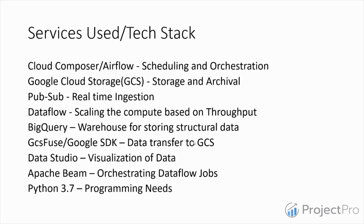The second service is Google Cloud Storage, which will be used for storage and archival. Google Cloud Storage is similar to S3 buckets in Amazon AWS or Blob Storage in Azure — we create a bucket in Google Cloud where we store our data. PubSub is used for real-time ingestion and is similar to Kafka.